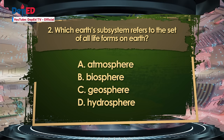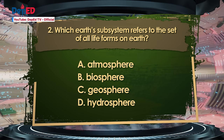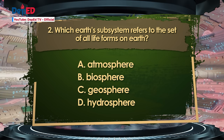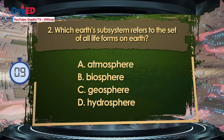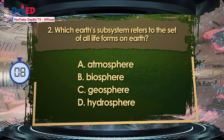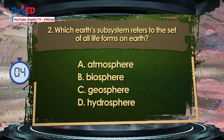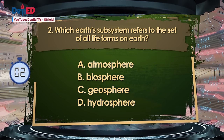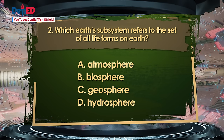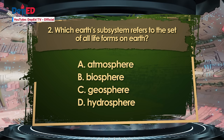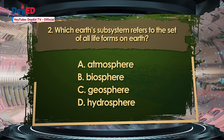Number 2. Which Earth subsystem refers to the set of all life forms on Earth? A. Atmosphere. B. Biosphere. C. Geosphere. D. Hydrosphere. The answer is letter B — Biosphere.